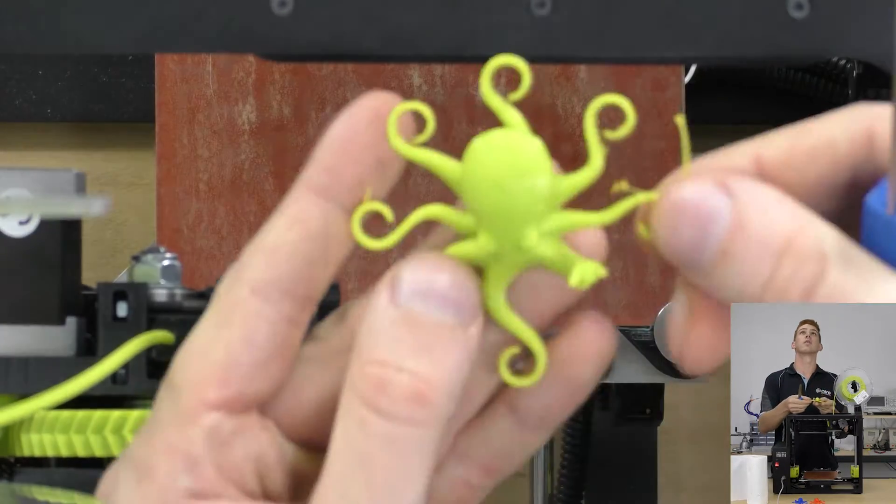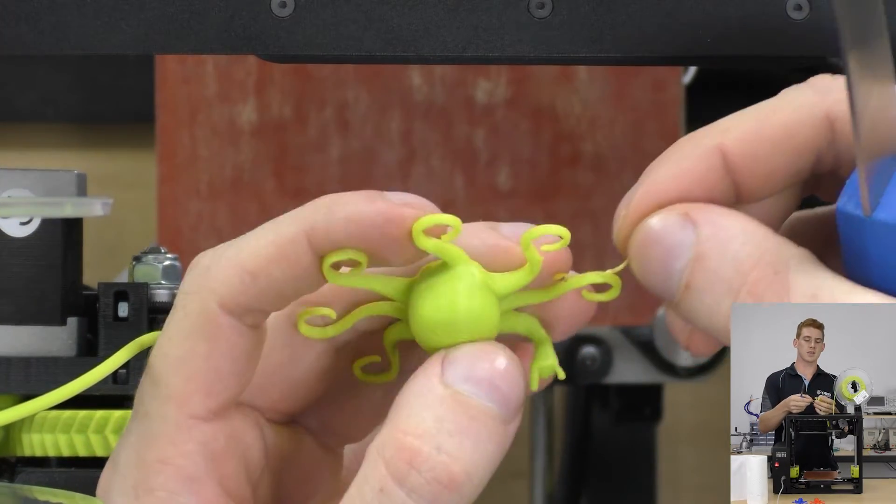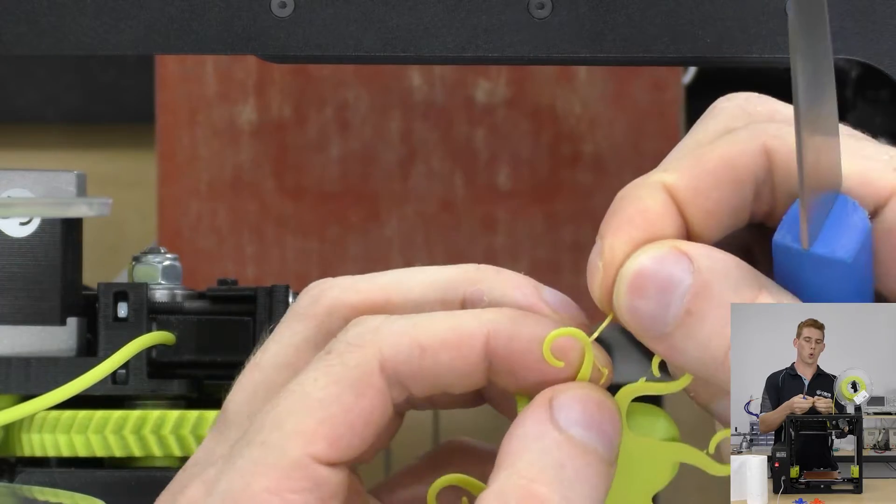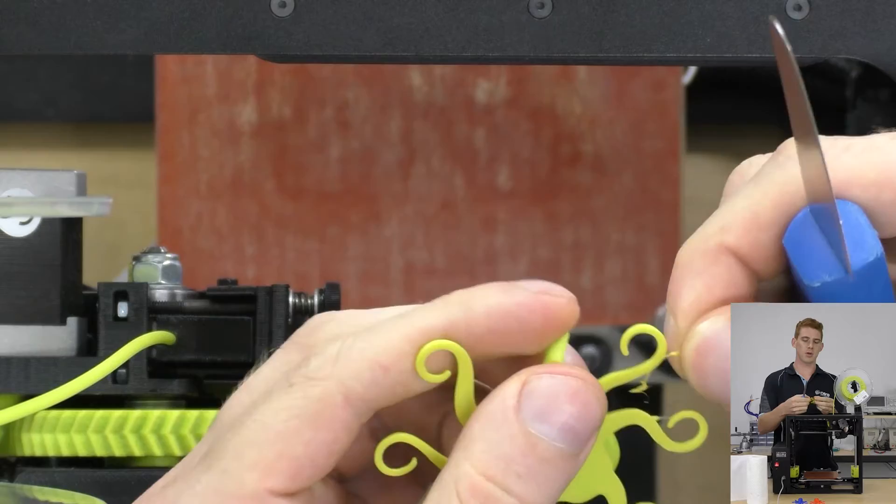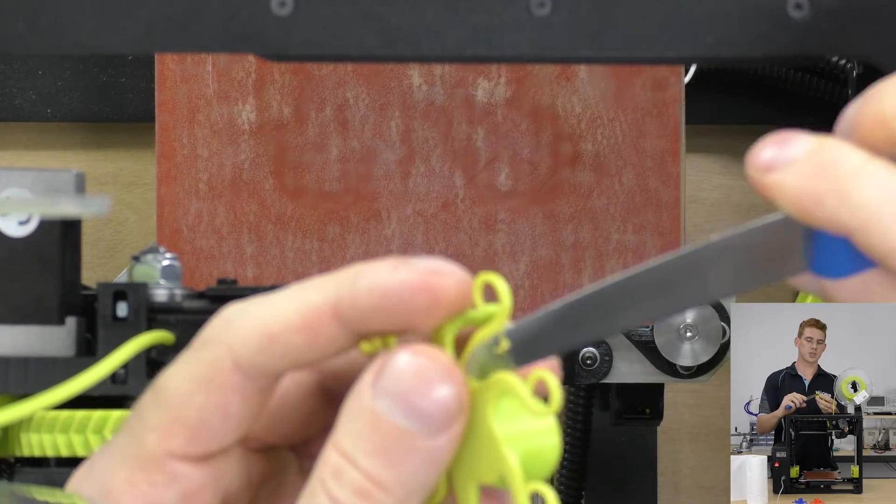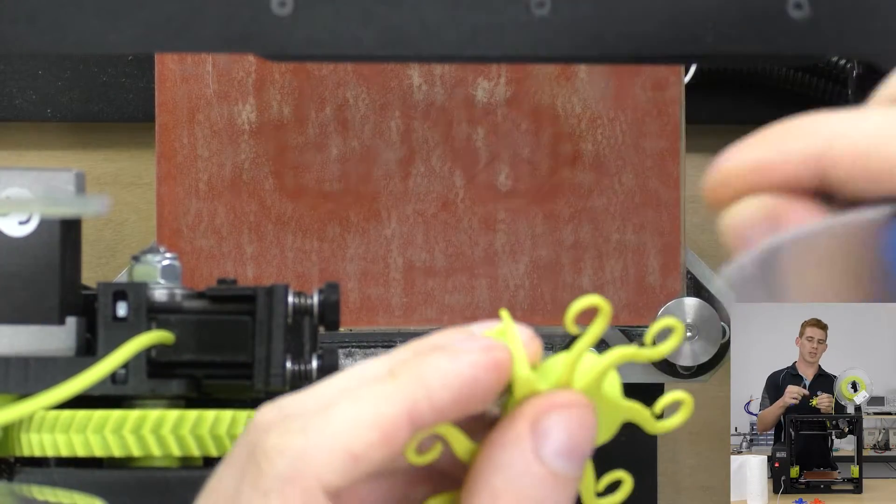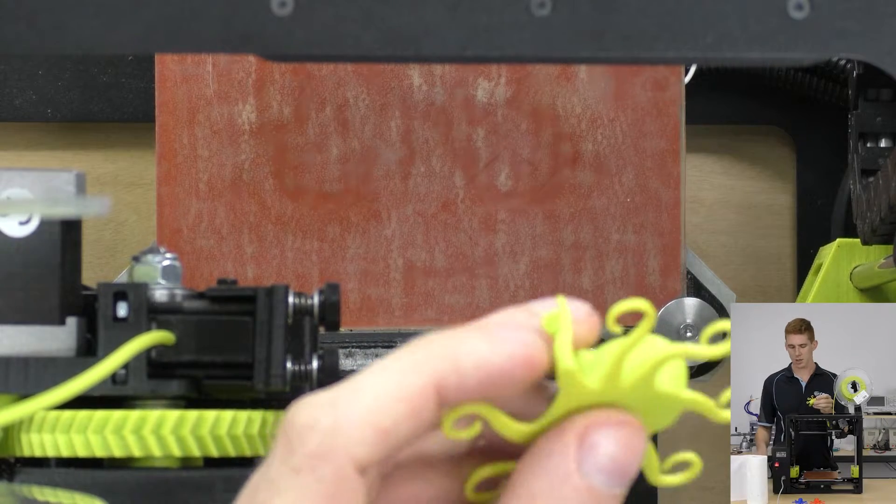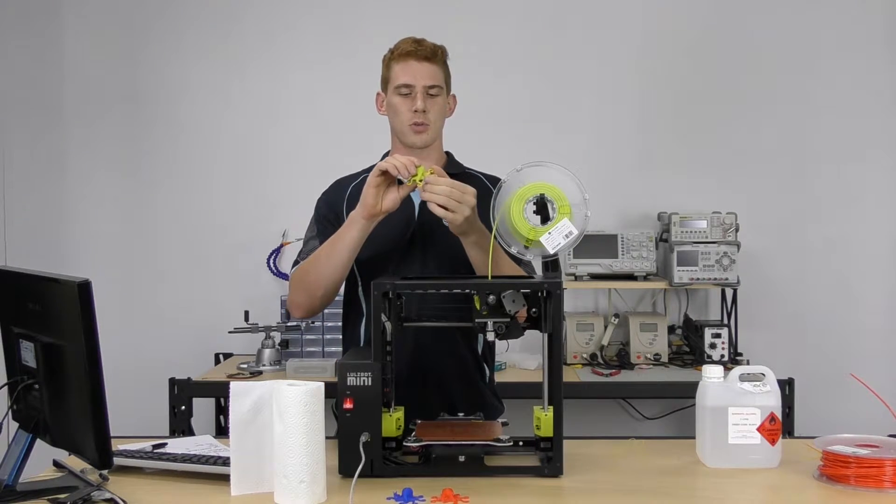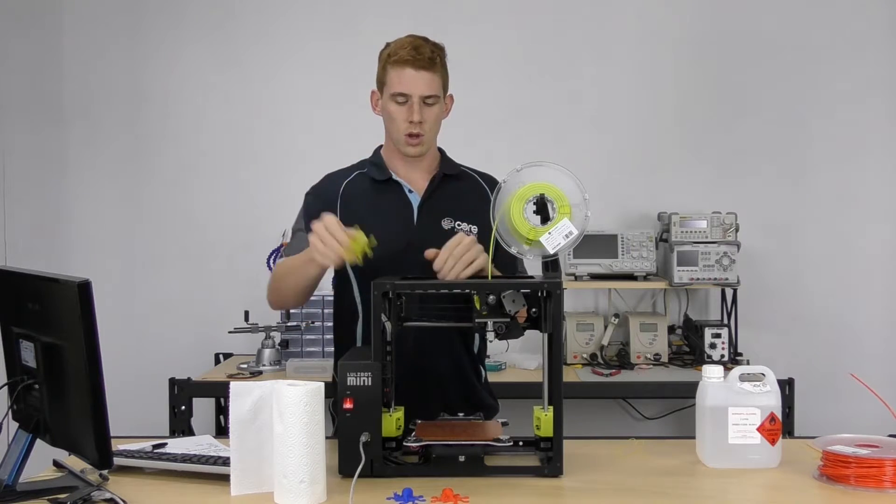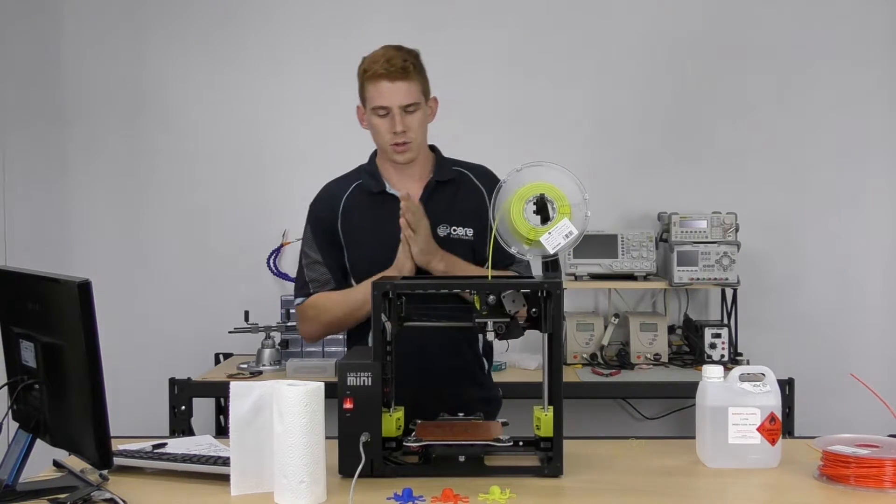So that is our print there. We can see that the skirt actually got caught on the print and caused it to string out. We can use our part removal knife to just pull those tags off, or we can grab an exacto blade or something similar, which also comes with the Lulzbot Mini, and use that to remove the parts from the bed.